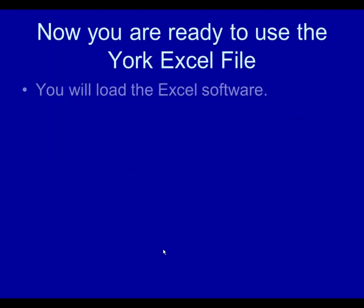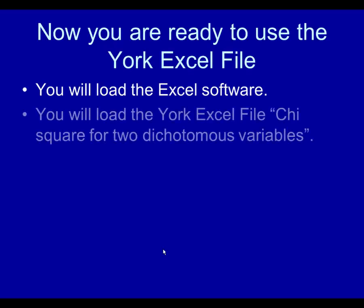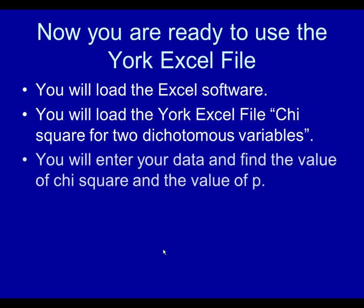Now you are ready to use the Excel file. You will load the Excel software into your computer, then load the Excel file entitled 'York Chi-Square for Two Dichotomous Variables.' You will enter your data and find the value of chi-square, the value of p, and the value of phi-coefficient.